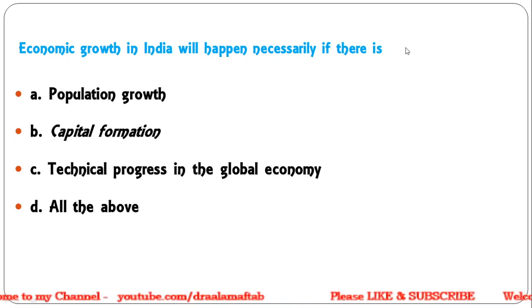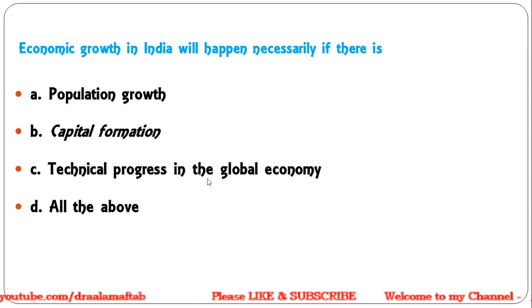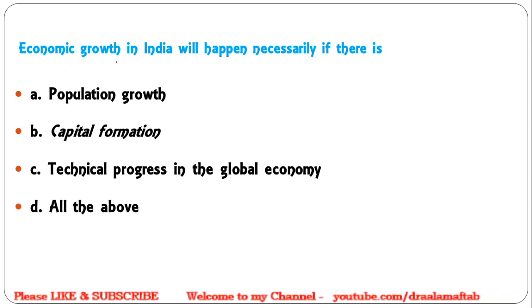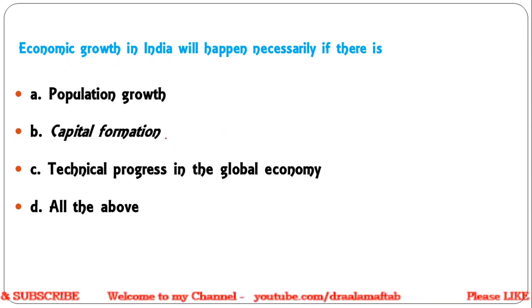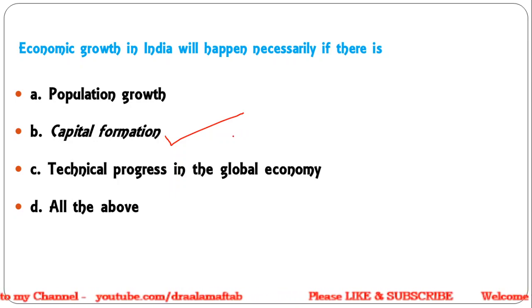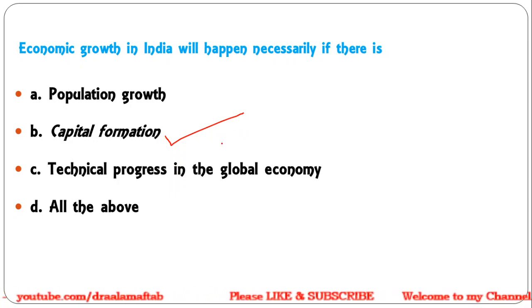Economic growth in India will happen necessarily if there is: A) Population growth, B) Capital formation, C) Technological progress in the global economy, D) All of the above. Economic growth in India will happen necessarily if there is capital formation and investment in technology and innovation, so B is the correct answer.